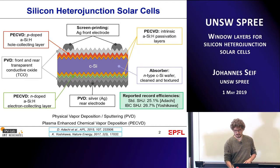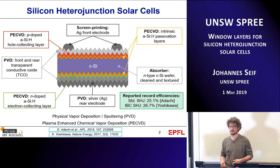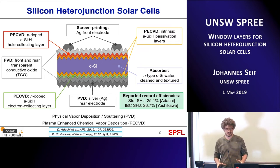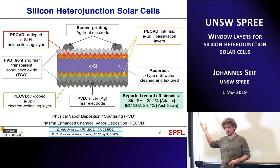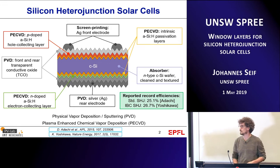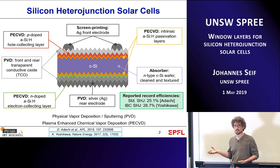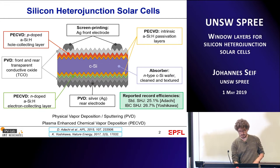With this structure, groups have published record efficiencies. For the standard two-contact device — one at the front, one at the back — the record is currently 25.1%. For the same heterojunction technology but with contacts only at the rear, people have published a record efficiency of 26.7%.